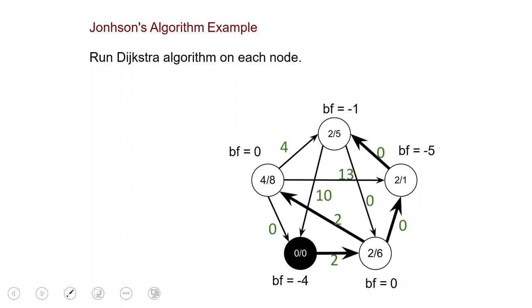For example, starting from one node, with the original weights the distance is six, while with the new weights the distance is two. This concludes our discussion of all pairs shortest paths.